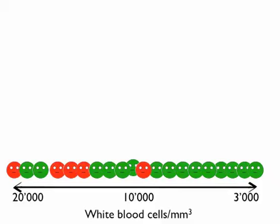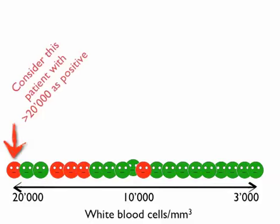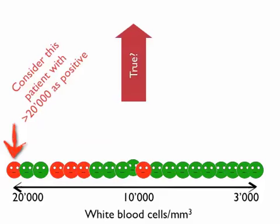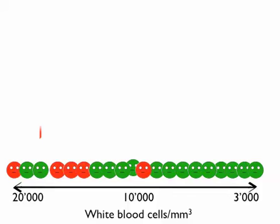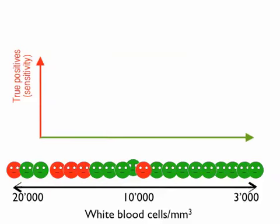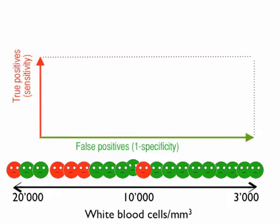Now imagine a patient with 20,000 white blood cells. What will happen if we consider this patient as positive? Will this patient be a true positive or a false positive? This patient will be a true positive. We can draw a line with the true positive going up, which represents sensitivity, and the false positive going up, which represents 1 minus specificity.